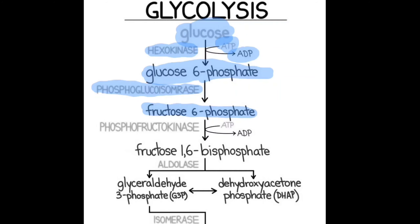Fructose-6-phosphate will form another molecule with the help of an enzyme called phosphofructokinase. Once again you are losing one ATP, and that phosphate will be attached onto carbon number one, and the new molecule will be called fructose-1,6-bisphosphate. For both phosphorylation steps, ATP is the phosphoryl group donor. That is why the first half is called the preparatory phase — because in this step we are expending ATPs.